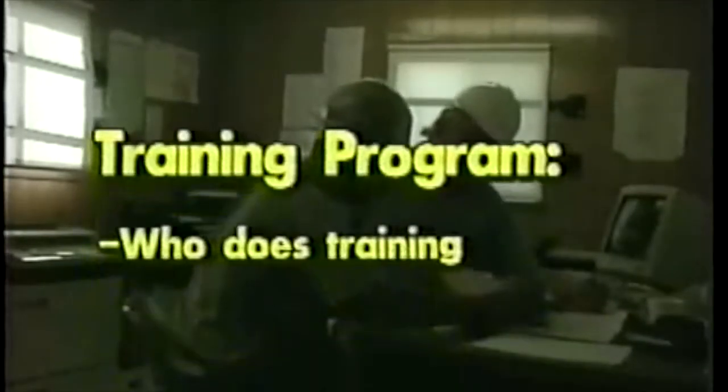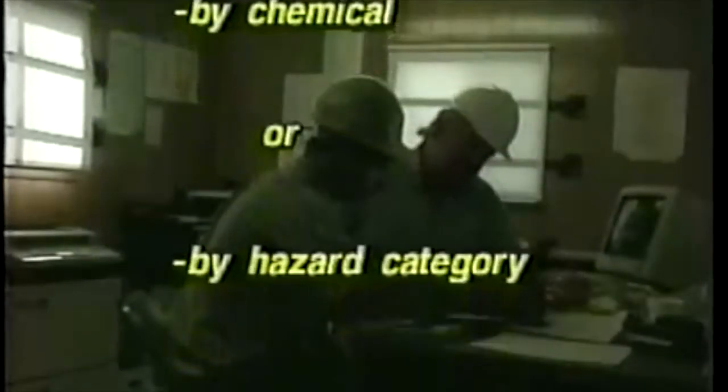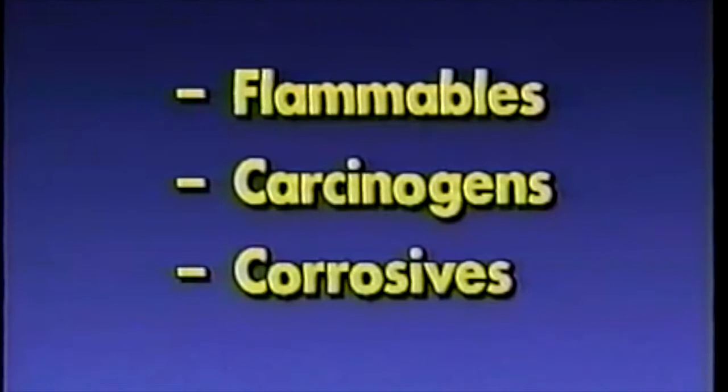At a work site where two or more chemicals are mixed together, additional requirements apply. Joe also asks to see the contractor's training program for hazard communication. He wants to know who's doing the training, what training materials are used, and whether employees are being trained about each hazardous chemical separately, or about the various categories of hazards discussed in the standard, such as flammables, carcinogens, or corrosives. Employees must be trained on how to protect themselves from the hazards of the materials they work with. He also wants to know how employees are trained about the hazards of materials in any unlabeled piping, and what to do in emergencies.